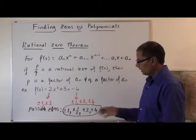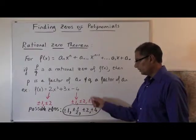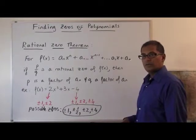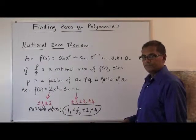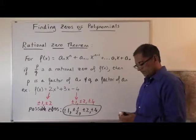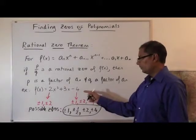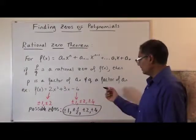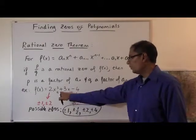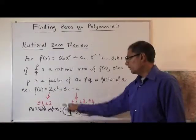And then it's a matter of plugging in these numbers into my function to see which one makes it zero. And if you plug in the numbers into the function to see what makes it zero, you'll see that if I plug in one here, one is the number that makes it zero.